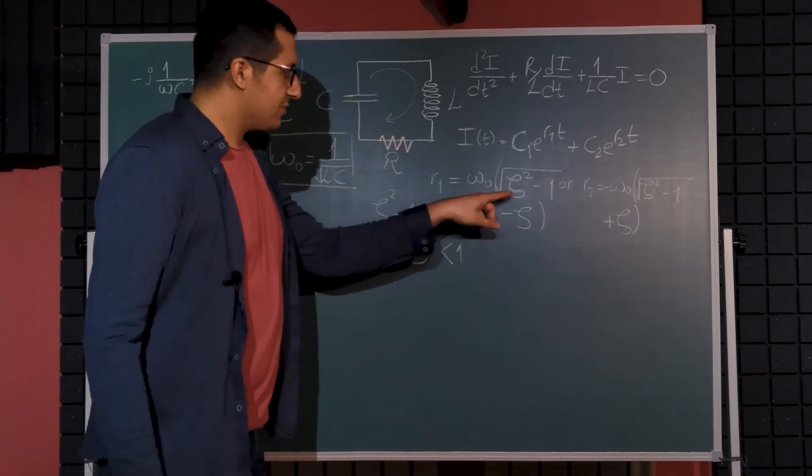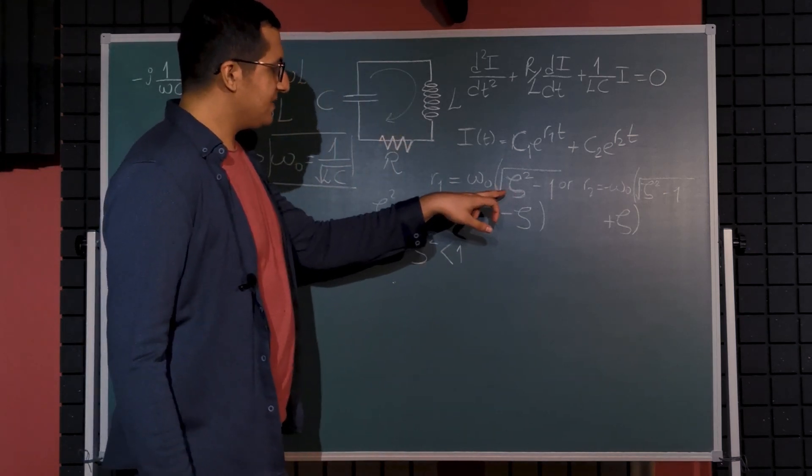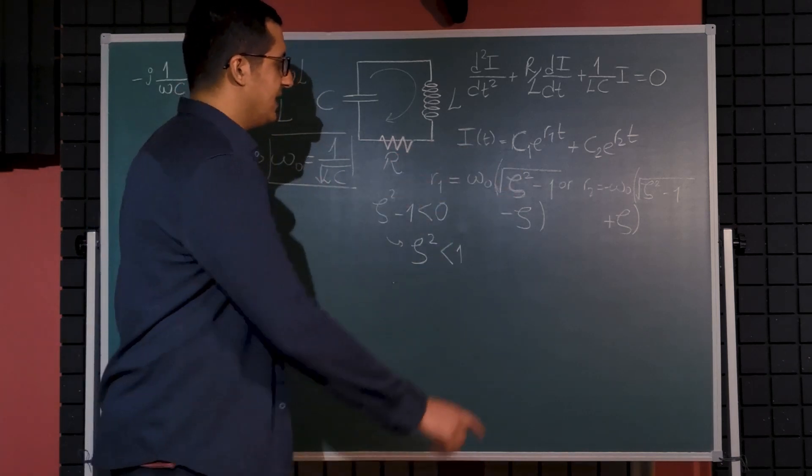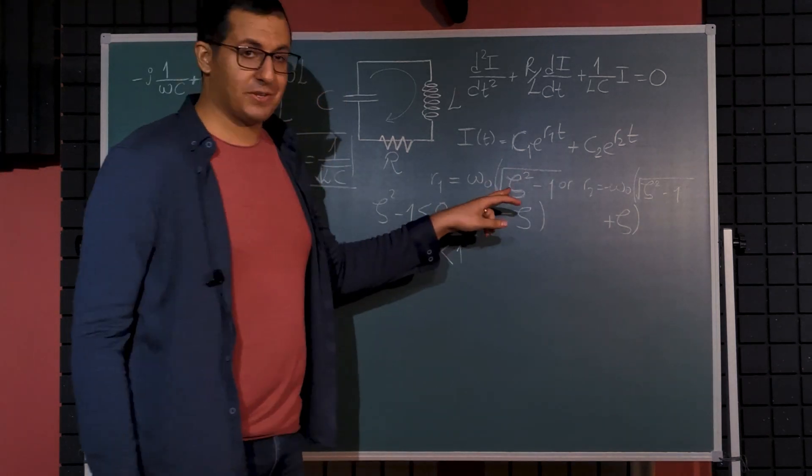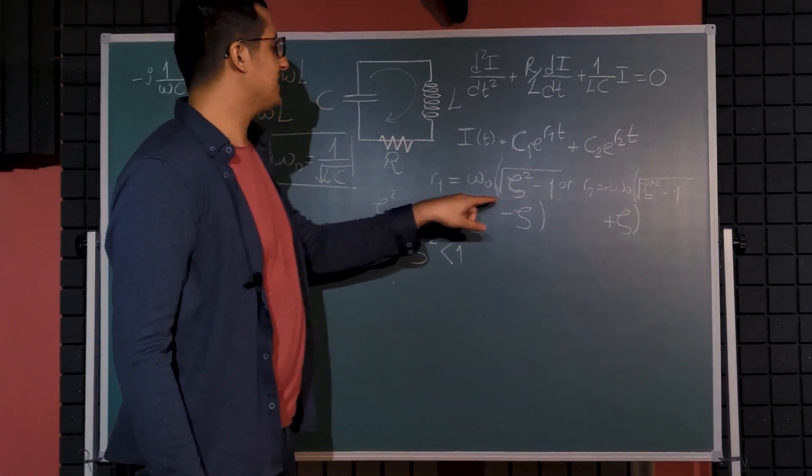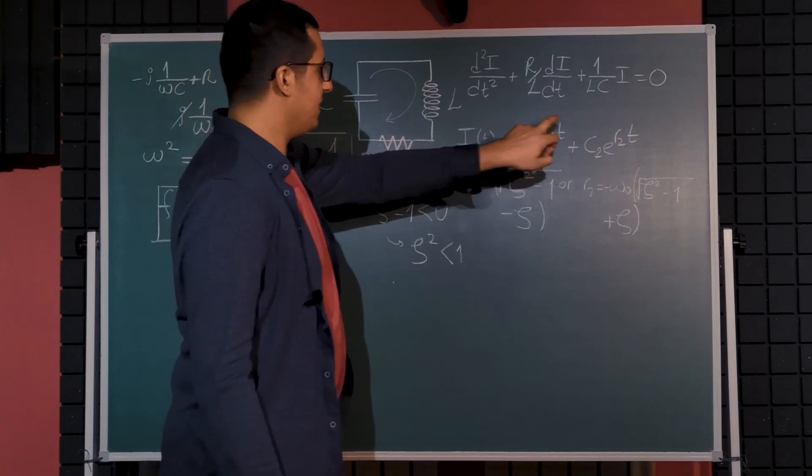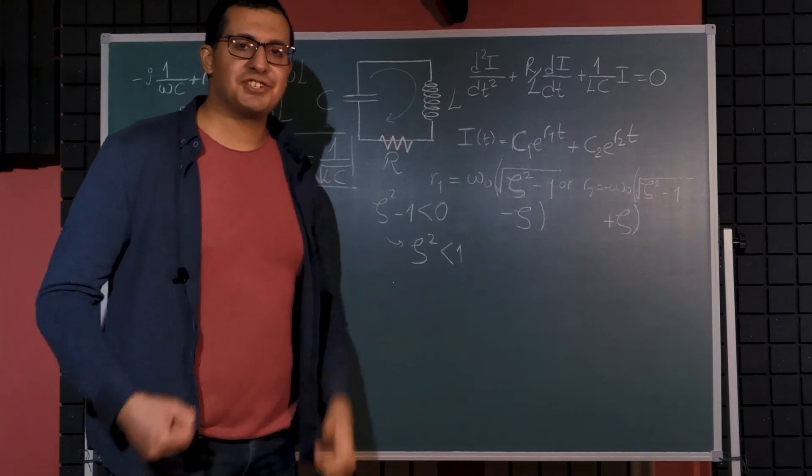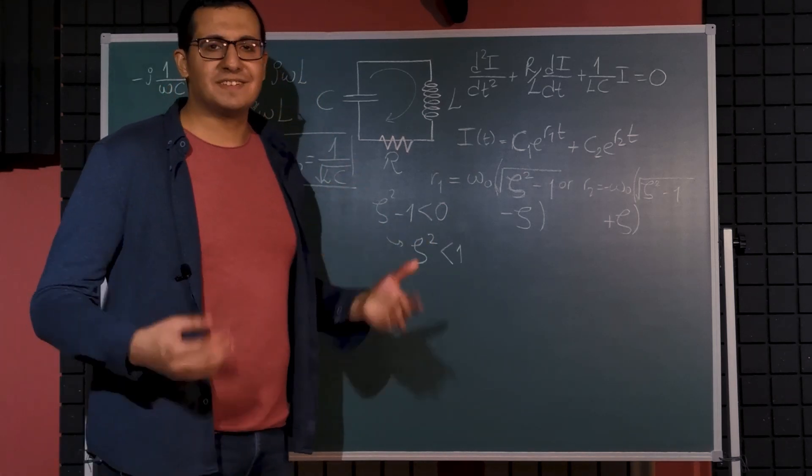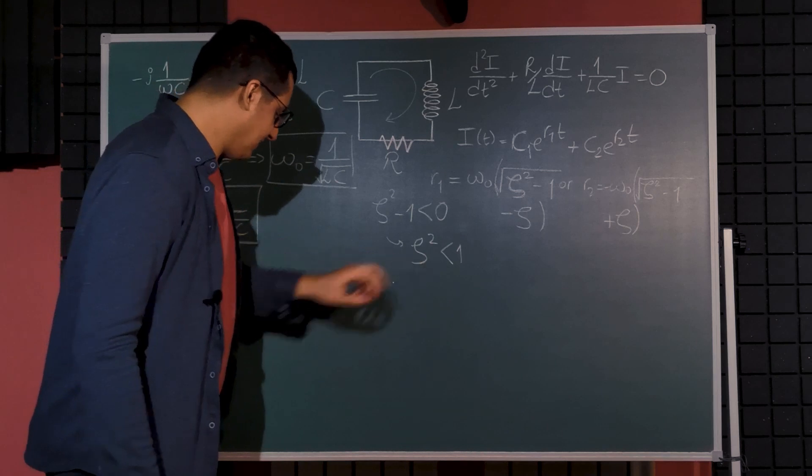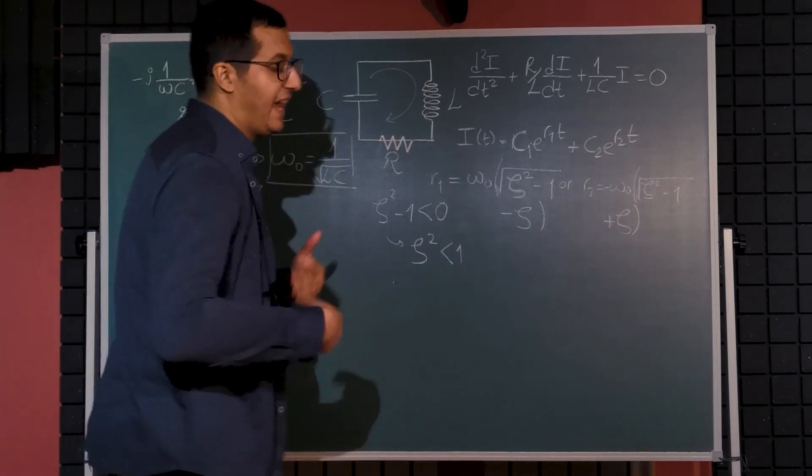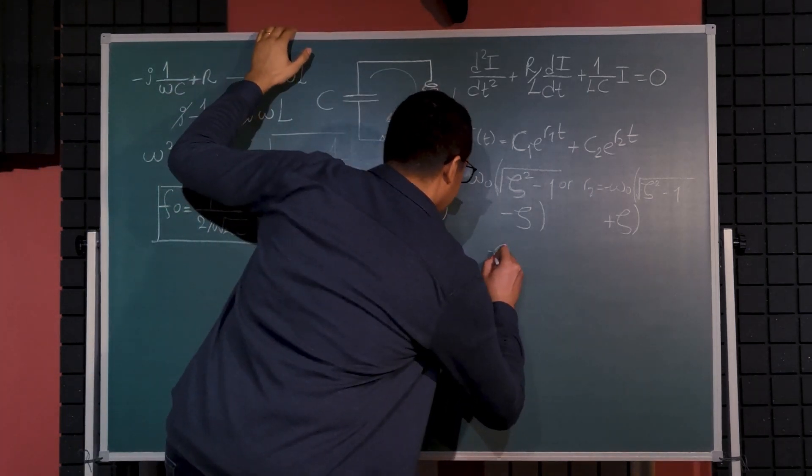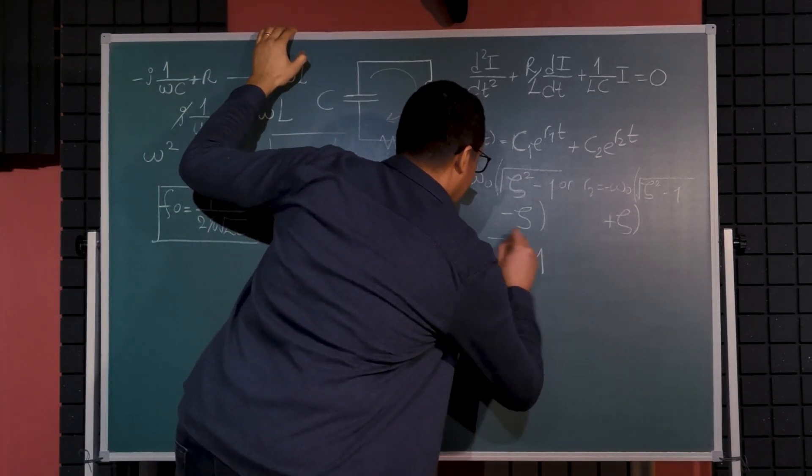So there are three cases here: either this expression can be positive, 0, or negative. The one we are interested in is this expression being negative because in that case we will have a complex number that will cause some oscillations along with an exponential decay. This kind of response is called underdamped response, and for that the damping constant must be smaller than 1 to satisfy underdamped case.